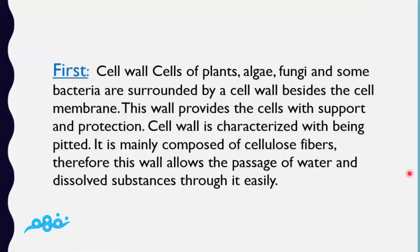First, we are going to talk about the cell wall. Cells of plants, algae, fungi, and some bacteria are surrounded by a cell wall besides the cell membrane. This wall provides the cells with support and protection. The cell wall is characterized by being perforated and is mainly composed of cellulose fibers. Therefore, this wall allows the passage of water and dissolved substances through it easily, to provide nutrition for the plant.